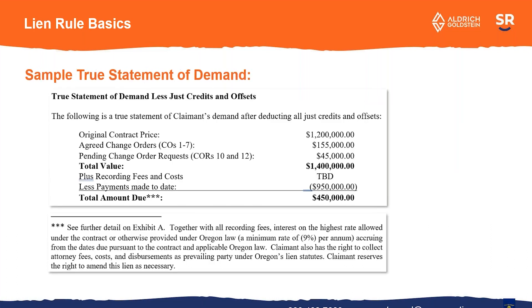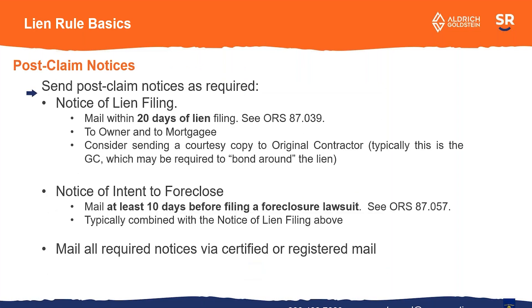Here's a sample true statement of demand, where you put in what the contract price is, what the change orders are, the total value of the work, and then subtract how much you've been paid — and that's your lien amount. Typically I would attach further detail and break it down between labor, materials, equipment, and services. The person receiving the lien needs to be able to ask basic questions and find out what the lien is based on.